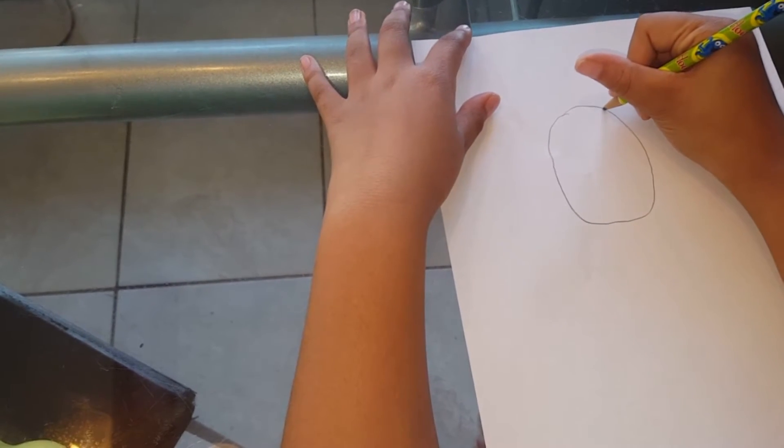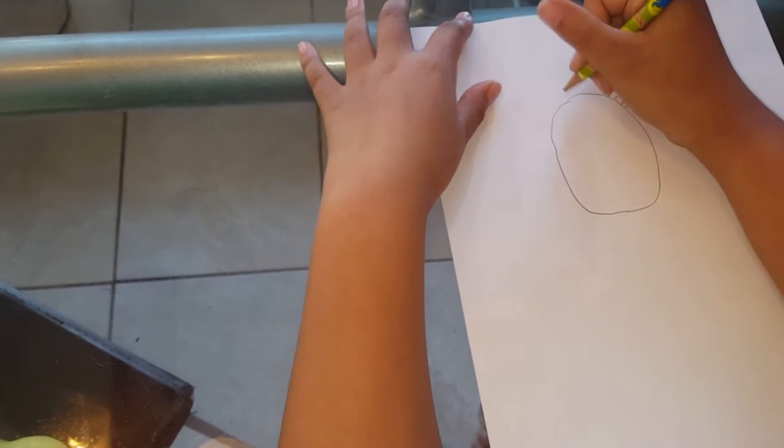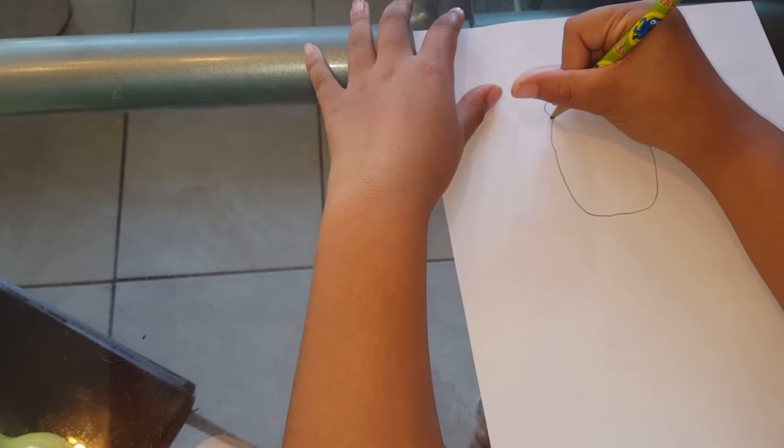And now we're going to go on to the ears. All you have to do is draw a half circle and then a smaller one inside of it. Do this with both of the sides.